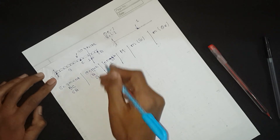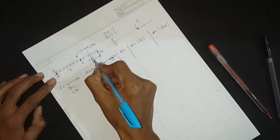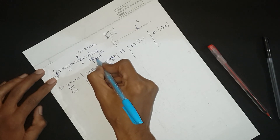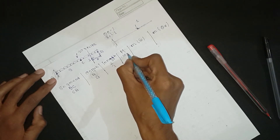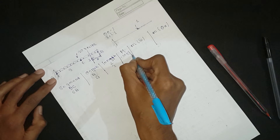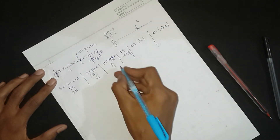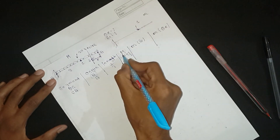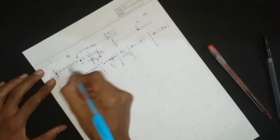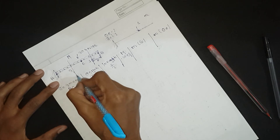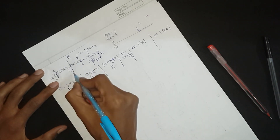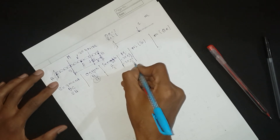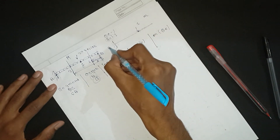For capital M in segment BC, with origin at B and distance x from origin, the UDL gives a moment of minus 30x²/2. Similarly, for segment CA with origin at B and distance x, capital M is also minus 30x²/2. Now for small m for deflection: in segment BC with origin at B, there is no unit load or moment, therefore small m equals 0. For segment CA with origin at B, the unit load of 1 at C gives a moment of 1 times (x minus 1), where x minus 1 accounts for the backward distance of 1 meter from B to C.